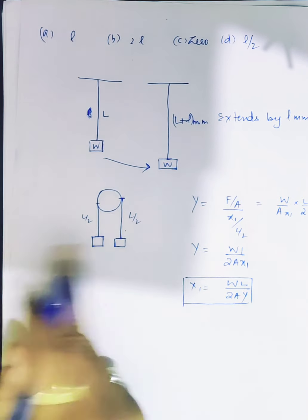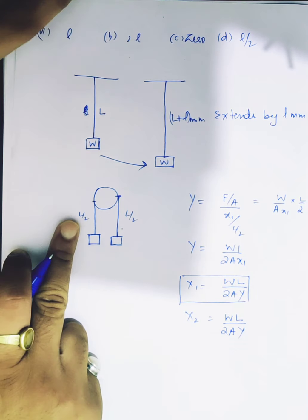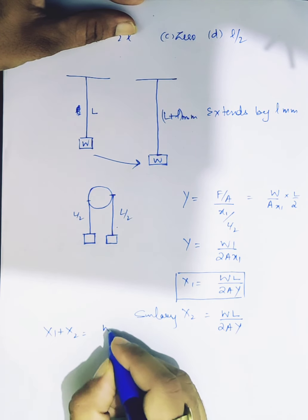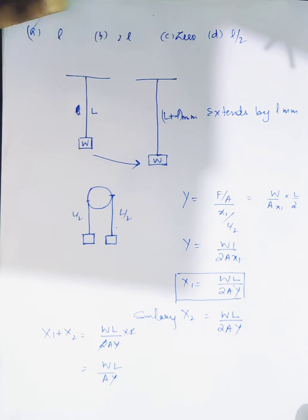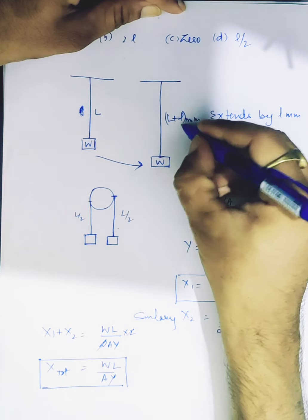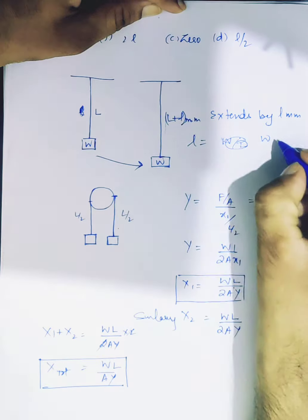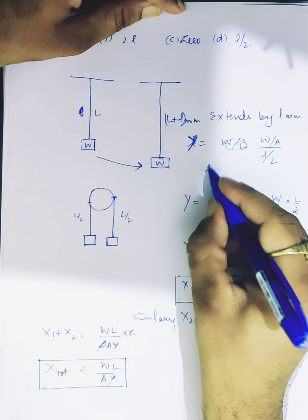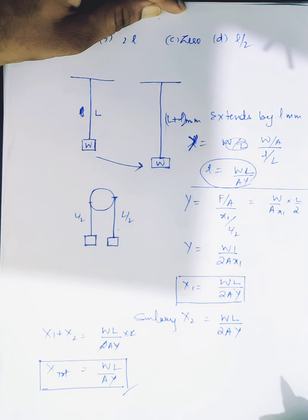Here we have the same weight, so we can write: extension = WL upon 2A·Y for each half. Similarly, for the other side: WL upon 2A·Y. Total extension = WL upon A·Y. Now, from Young's modulus, we can write W·L upon A·Y equals small l, so the total extension comes out to be the same — equal to L.